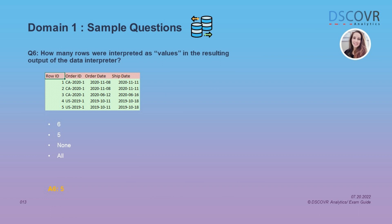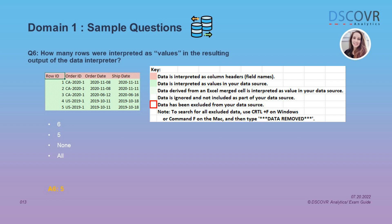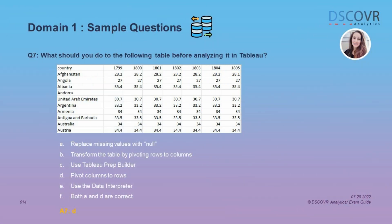This is a straightforward question which assumes that you know how to read the output of a data interpreter. The question is asking how many rows of data were interpreted as values in this particular output, and the answer is 5, because anything highlighted in red is interpreted as column headers. In another question, we're given a table and asked what we should do to it before analyzing it. If you look closely, you'll see that the years appear as columns — this is a problem because Tableau prefers a tall format as opposed to a wide format. So you would pivot your columns to rows.